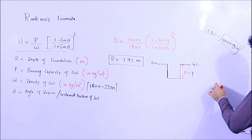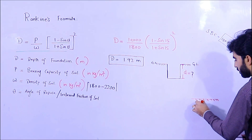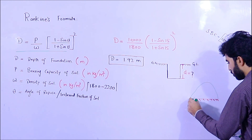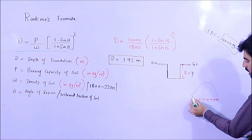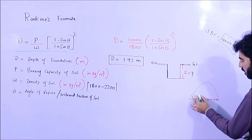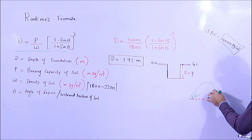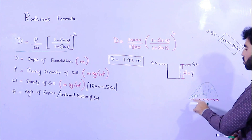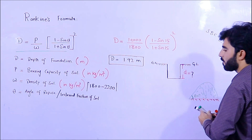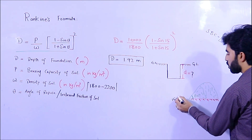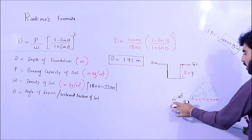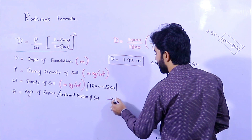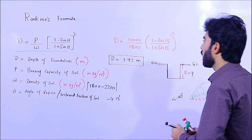The angle of repose is illustrated here: you can see the ground level, and when you place soil on the ground it makes an angle — that is the angle of repose. Sometimes it makes a maximum angle, sometimes a minimum, depending on the soil type. Normally we have angles from 15 to 40 degrees. For this example, let's say the angle of repose theta is 15 degrees.